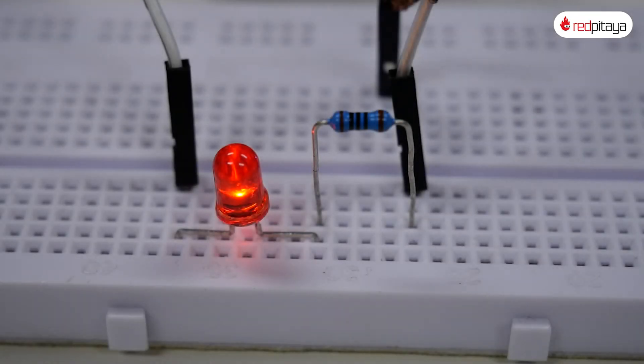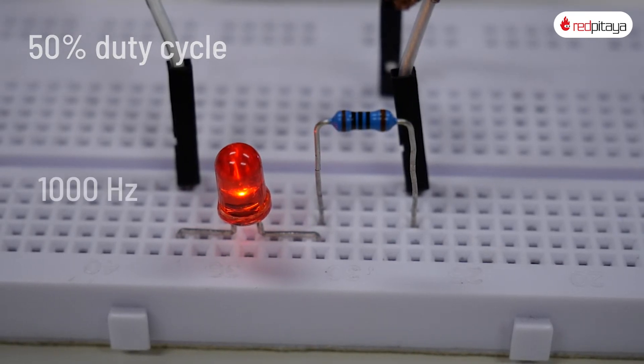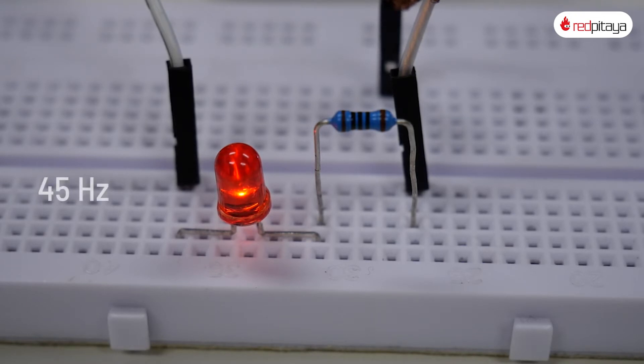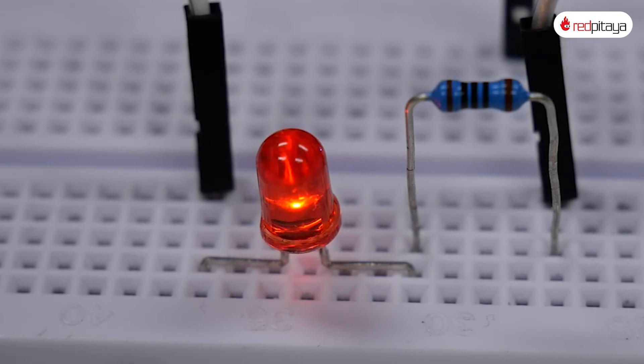Perceived flickering. Let me now set the duty cycle to 50% but decrease the frequency. Currently it's at 1000 and let's drop it to 45. At this frequency nothing seems to have changed when observing the LED in person. On camera though things got a little wonky. If I drop the frequency even further I will start noticing that the LED is blinking.